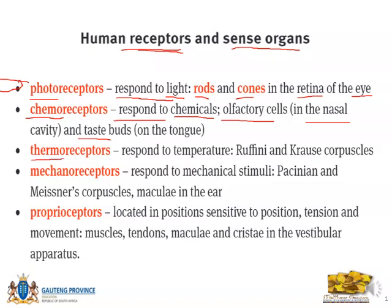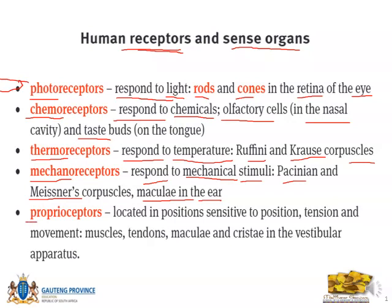The next type is thermoreceptors. When I think of 'thermo' I think of thermometer, I think of temperature, because they respond to temperature. For example, the Ruffini and Krause corpuscles. Next are mechanoreceptors — 'mechano' makes me think of mechanical, because they respond to mechanical stimuli. For example, the Pacinian and Meissner's corpuscles and the maculae found in the ear. Then proprioreceptors — 'proprio' relates to positioning, and these receptors are sensitive to position, tension, and movement, found in muscles, tendons, maculae, and cristae in the vestibular apparatus. Those are the major types of receptors found in the body.